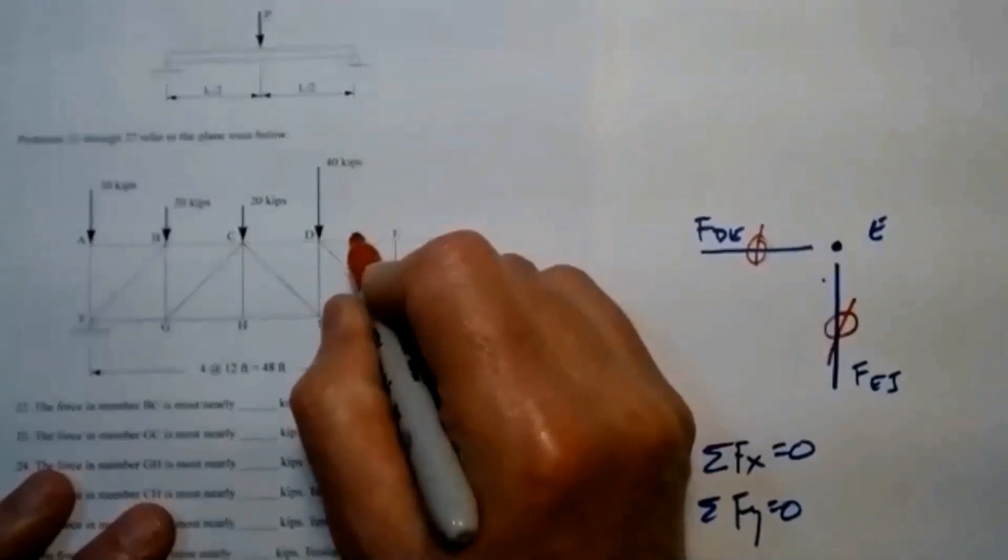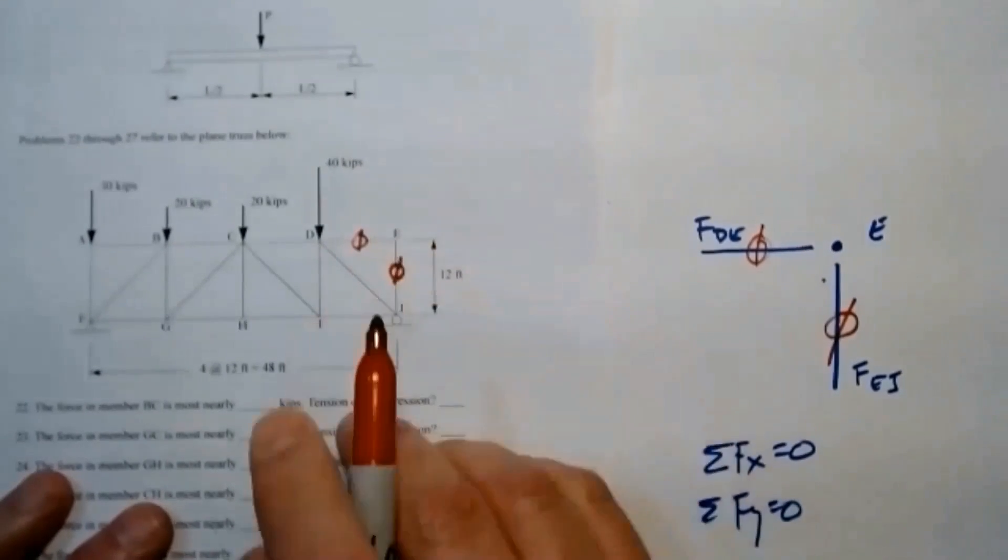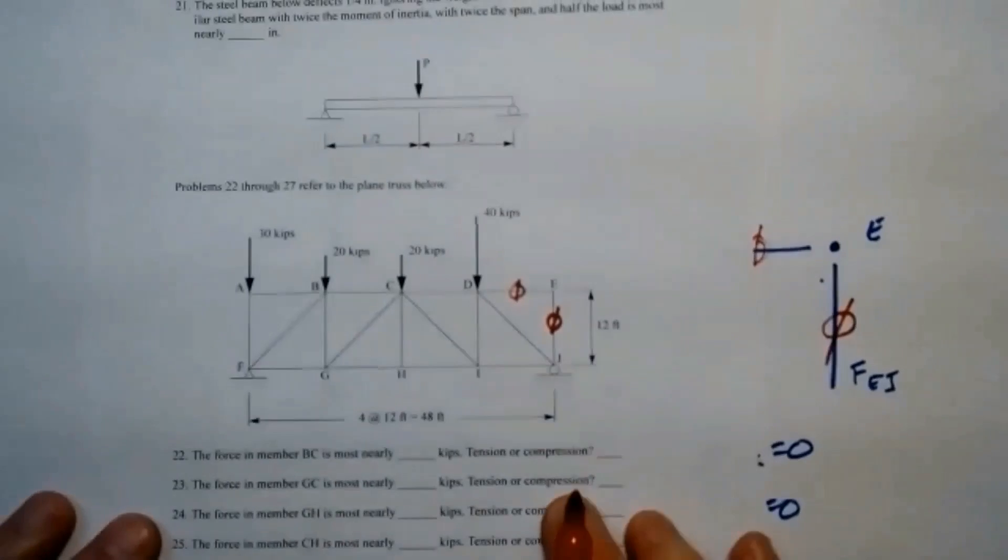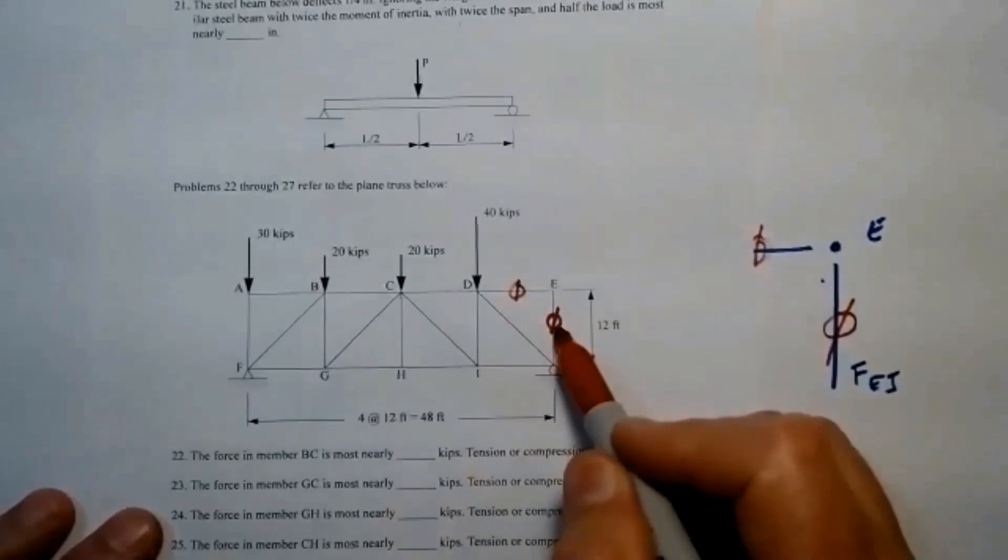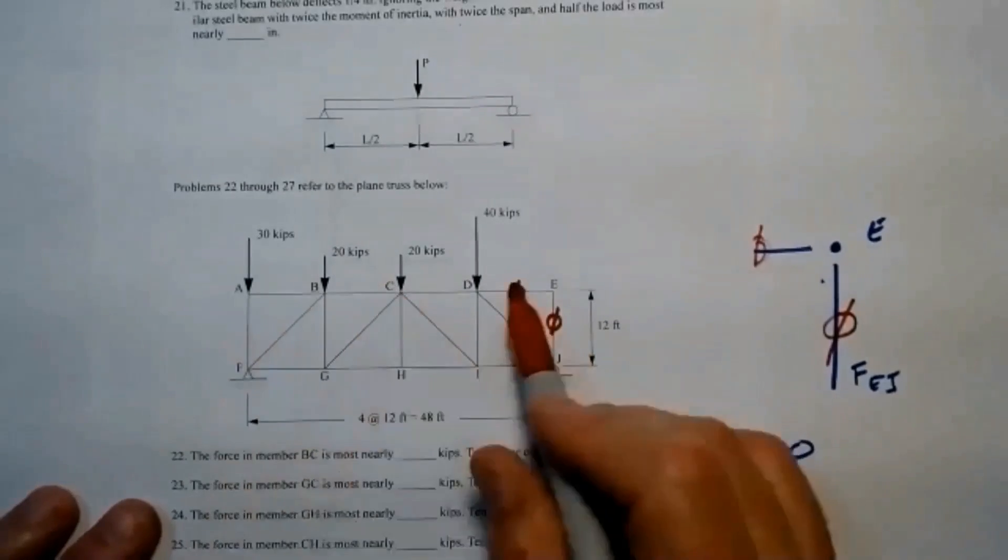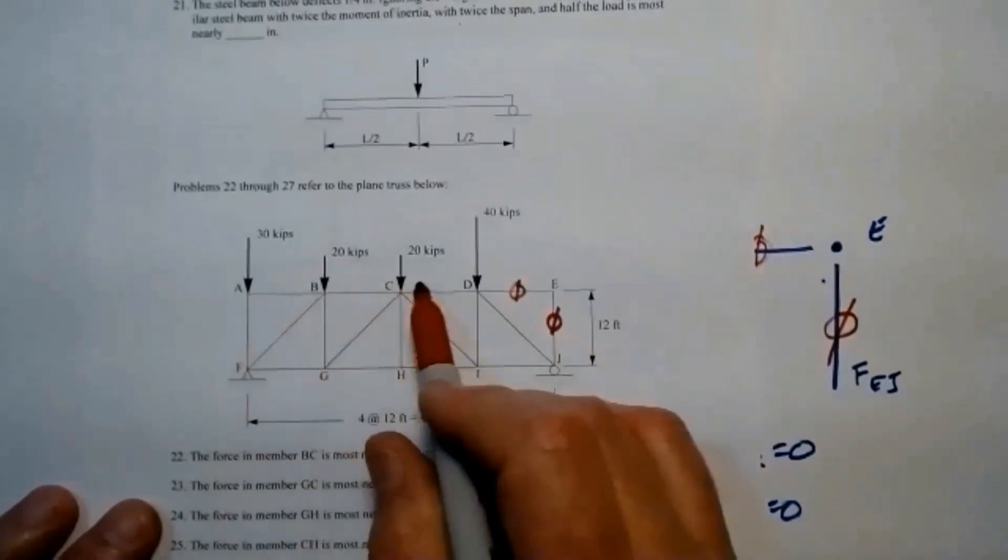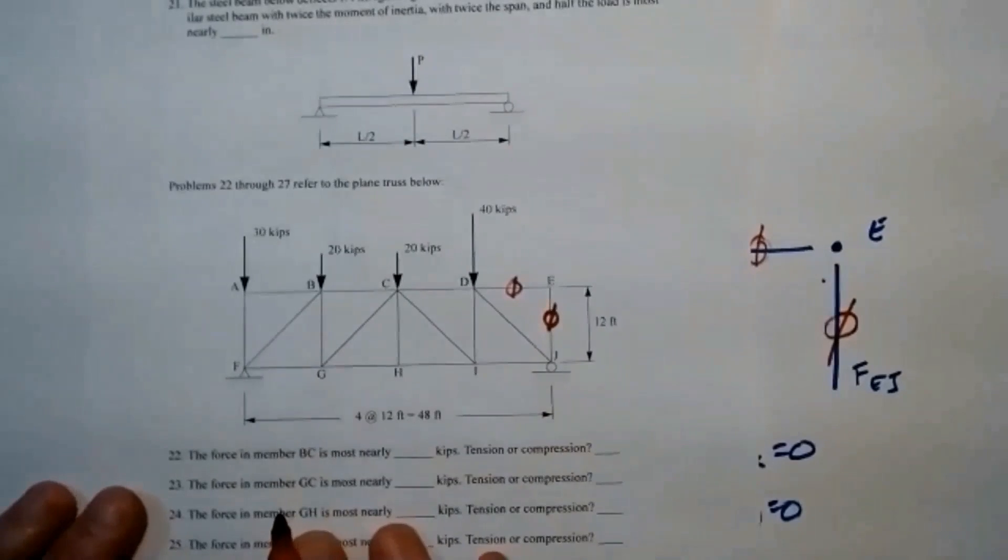that means that FEJ is also zero. So this is zero and that's zero. It's not in tension or compression. I could cut that out of the truss and nothing negative would happen as far as how these loads are making their way to these reactions to the supports.